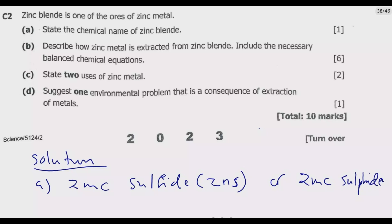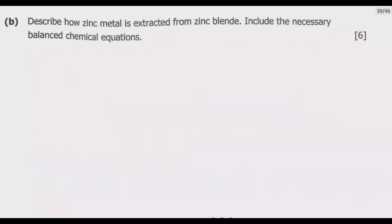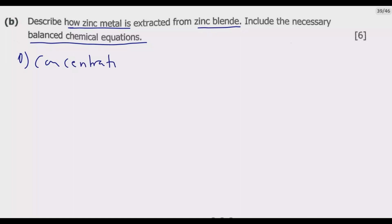That's question A. For question B, we are required to describe how zinc metal is extracted from zinc blende, which is zinc sulfide, and include the necessary balanced chemical equations. There are three steps involved in extracting zinc metal from zinc blende. The first step is concentration — the ore is crushed and then concentrated by the froth flotation process.